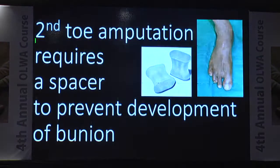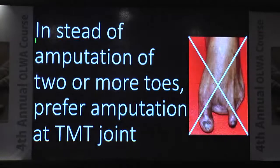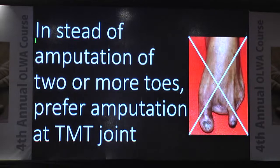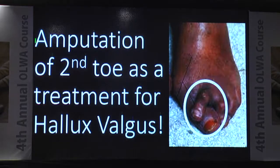Second toe amputation requires placement of a spacer to prevent development of a bunion. Instead of amputation of two or more toes, prefer amputation at the tarso-metatarsal joint — that is a better solution. Sometimes in a bad hallux valgus case, amputation of the second toe can be a treatment for hallux valgus.